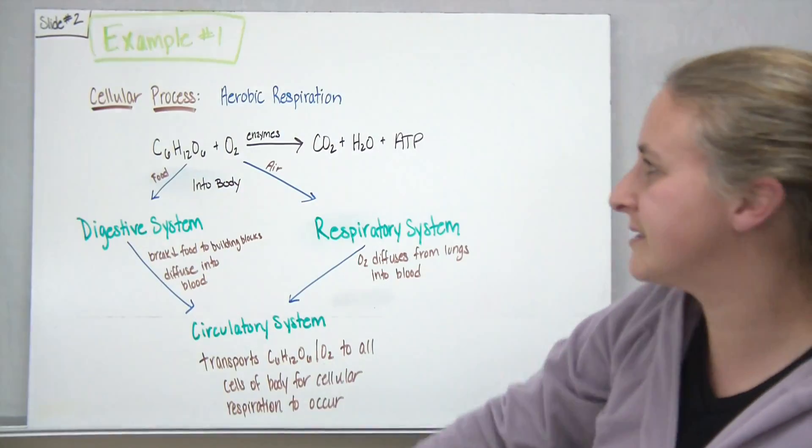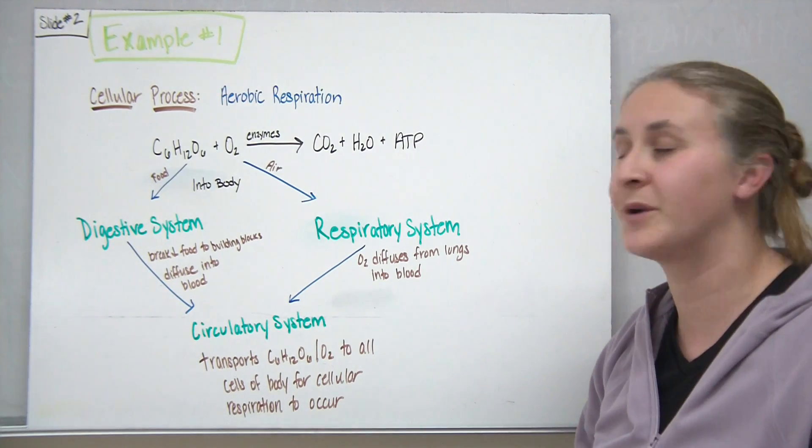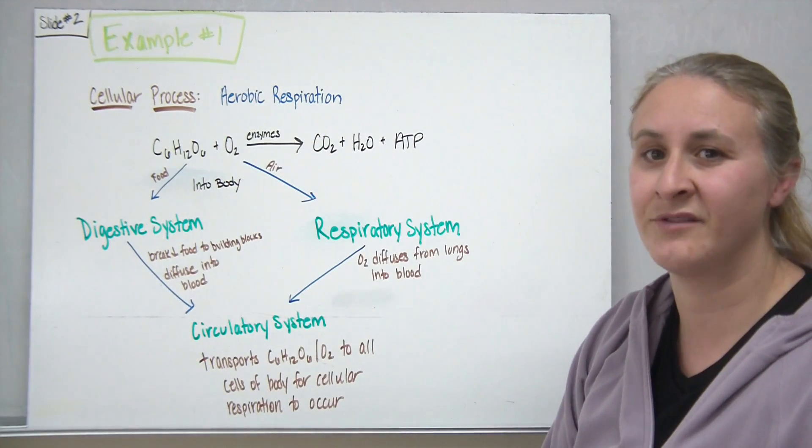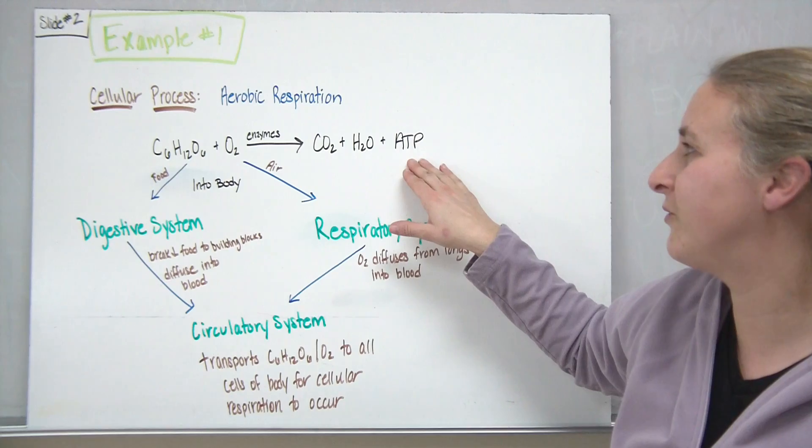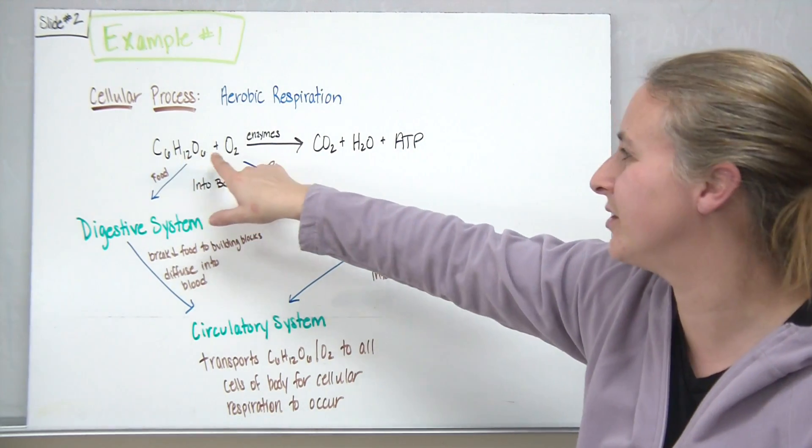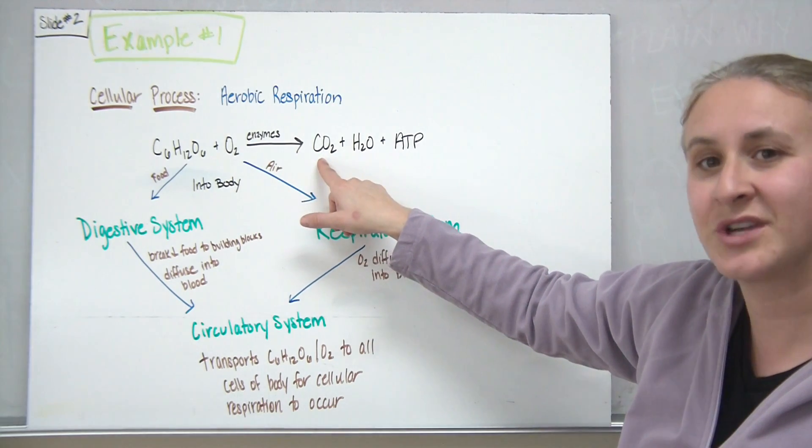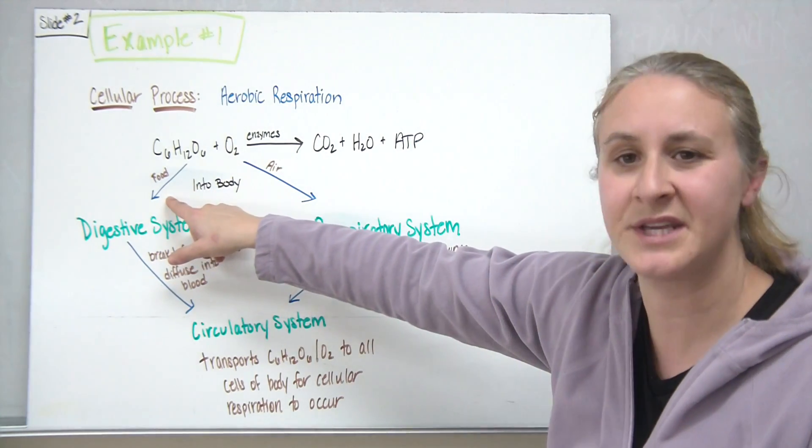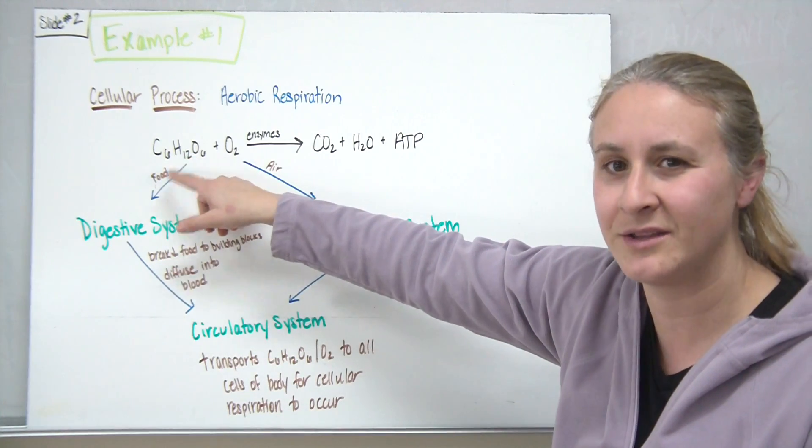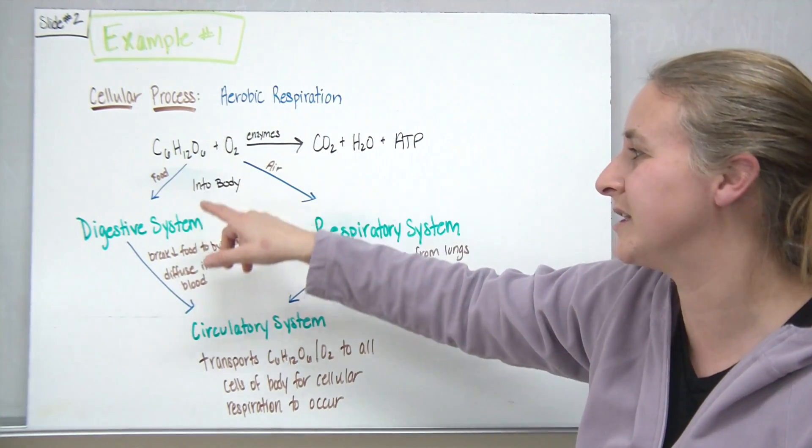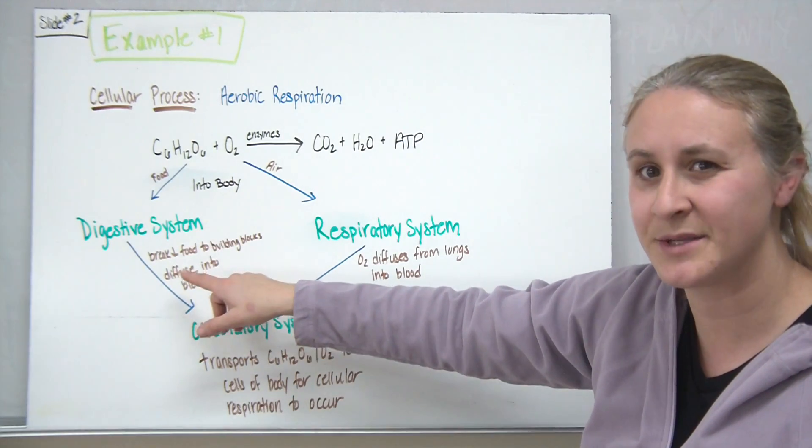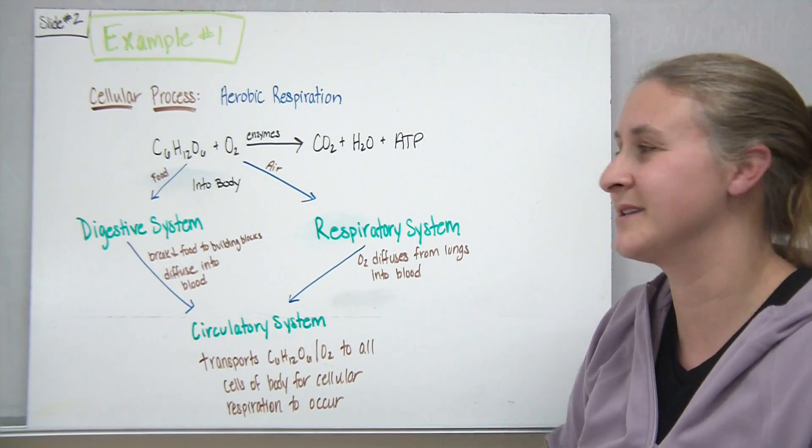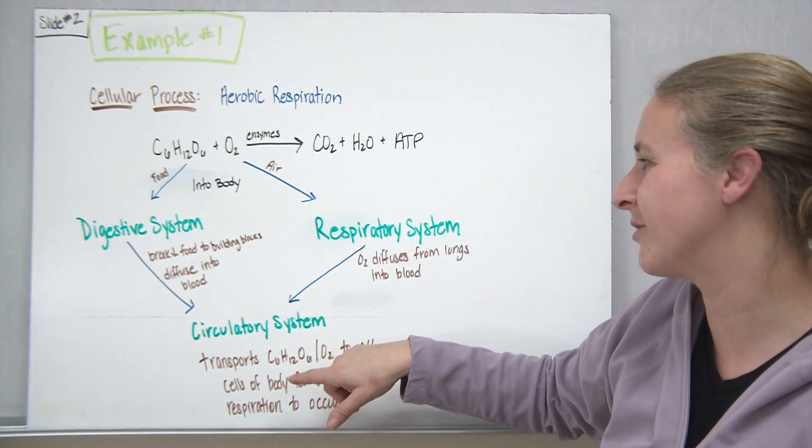Those are our main body systems that we discussed and let's talk about some examples of how they work together in order to maintain some balance in our body. So if we think about one process of aerobic respiration, we have our primary formula for aerobic respiration. We have sugars, oxygen using enzymes which get transformed into carbon dioxide, water, and ATP. We have a couple of things that we need to look at. If we take our foods, originally when it comes into the body, it's not in the form of glucose that it needs to be used in for cellular respiration. So our digestive system needs to break that food down into the building blocks so that it can diffuse into the bloodstream from our digestive system which then it can be used in this process of cellular respiration.